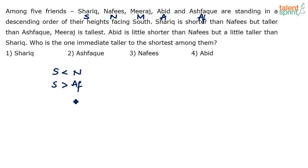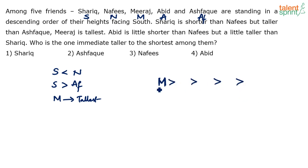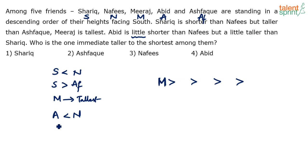Miraj is tallest, so the sequence will start with Miraj because we are arranging them in descending order. Next clue: Abid is a little shorter than Nafis but a little taller than Sharik. So Abid is shorter than Nafis and taller than Sharik — A is greater than S.